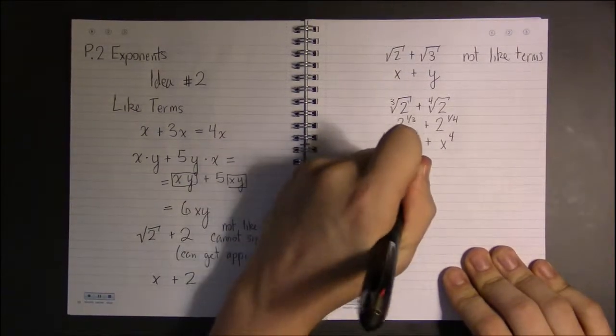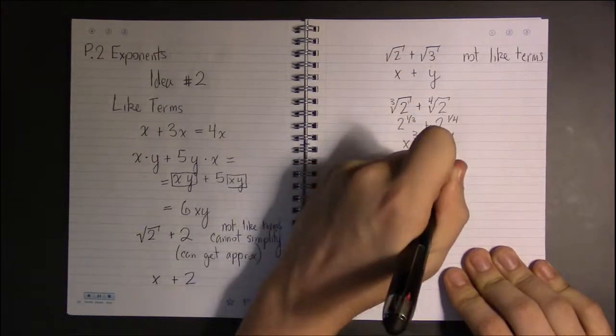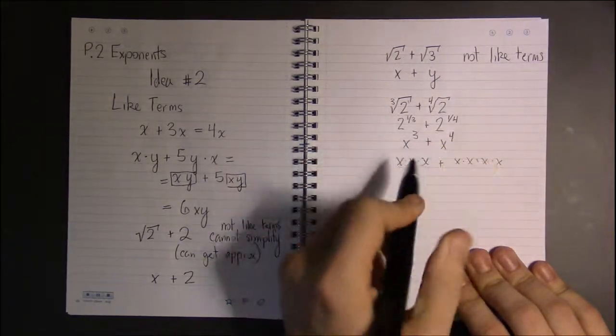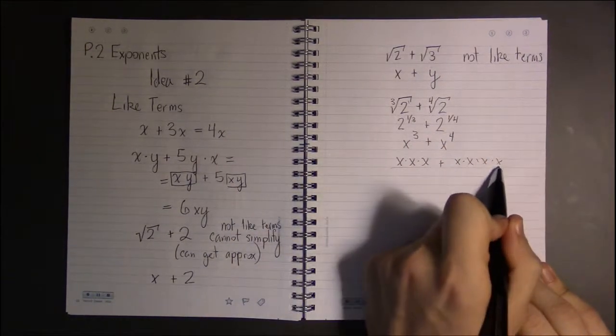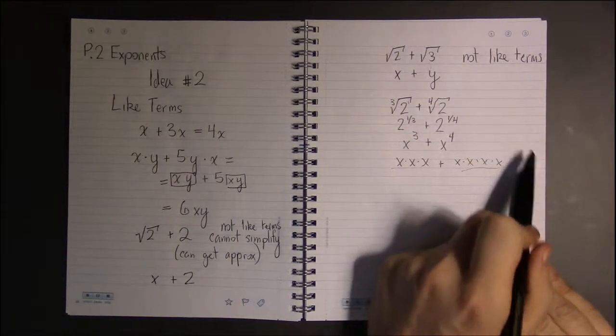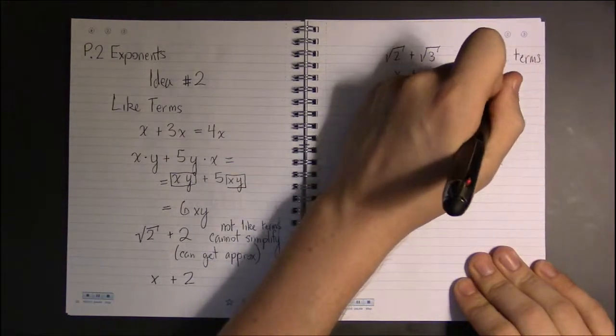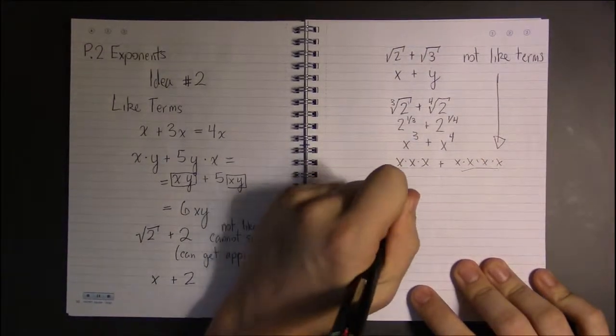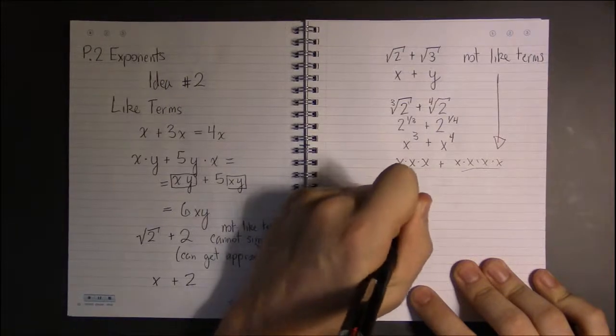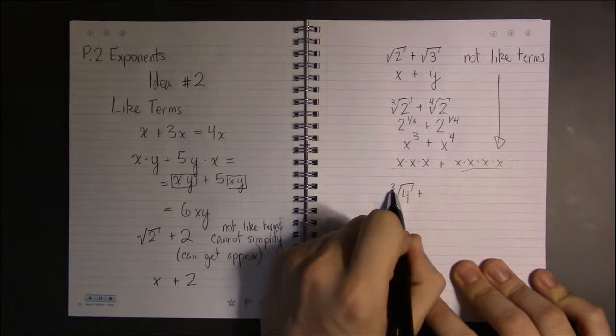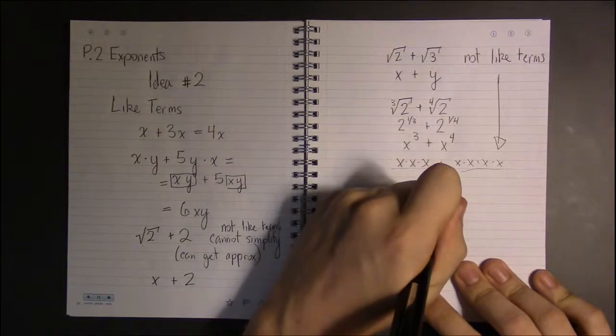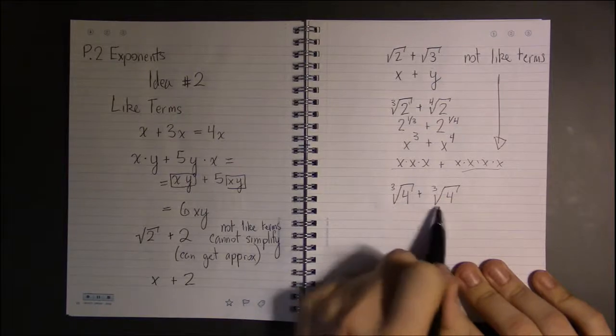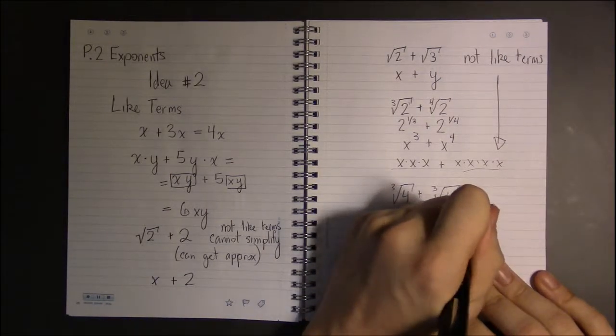So the variables are the same, the numbers are the same. I have x times x times x plus x times x times x times x. Since these two things aren't identical, I can't combine them. But if they have the exact same thing inside the radical and the exact same thing outside the radical, then these are like terms and I can combine them.